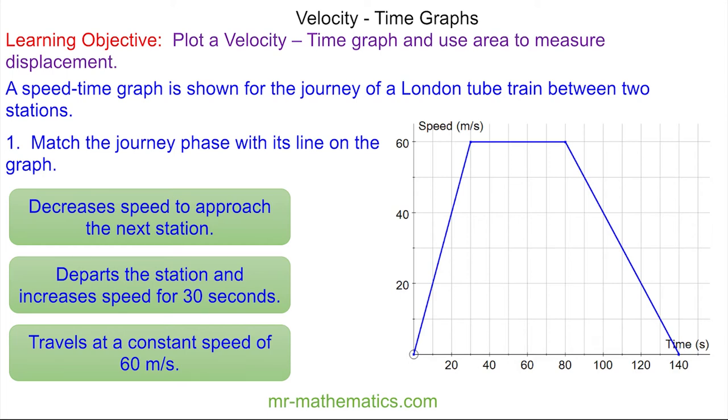Welcome to our lesson on interpreting speed and time graphs. Here we have a graph of the journey of a London tube train between two stations and we're going to match each of these parts to our graph.